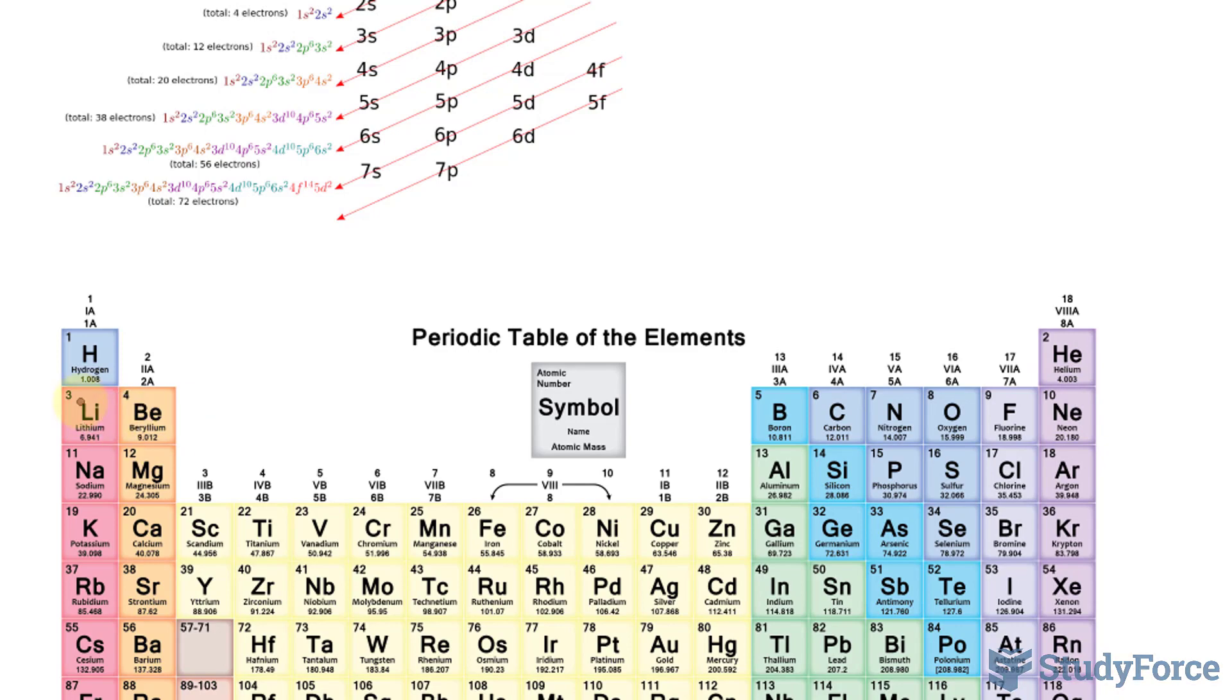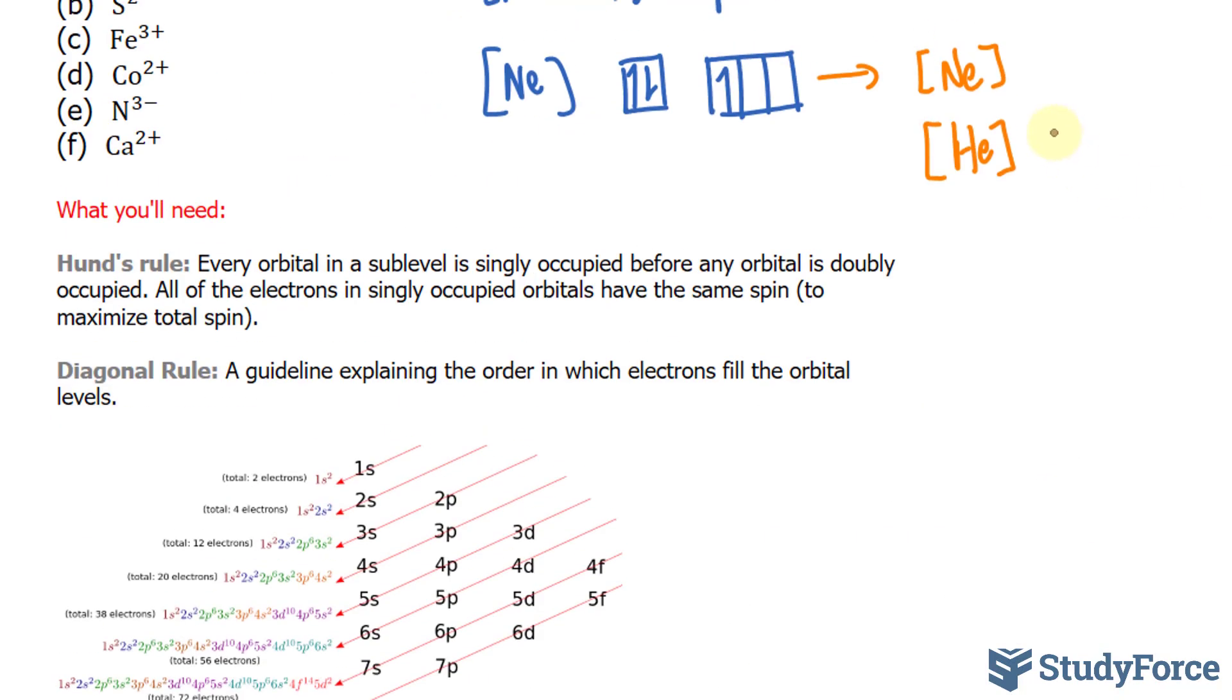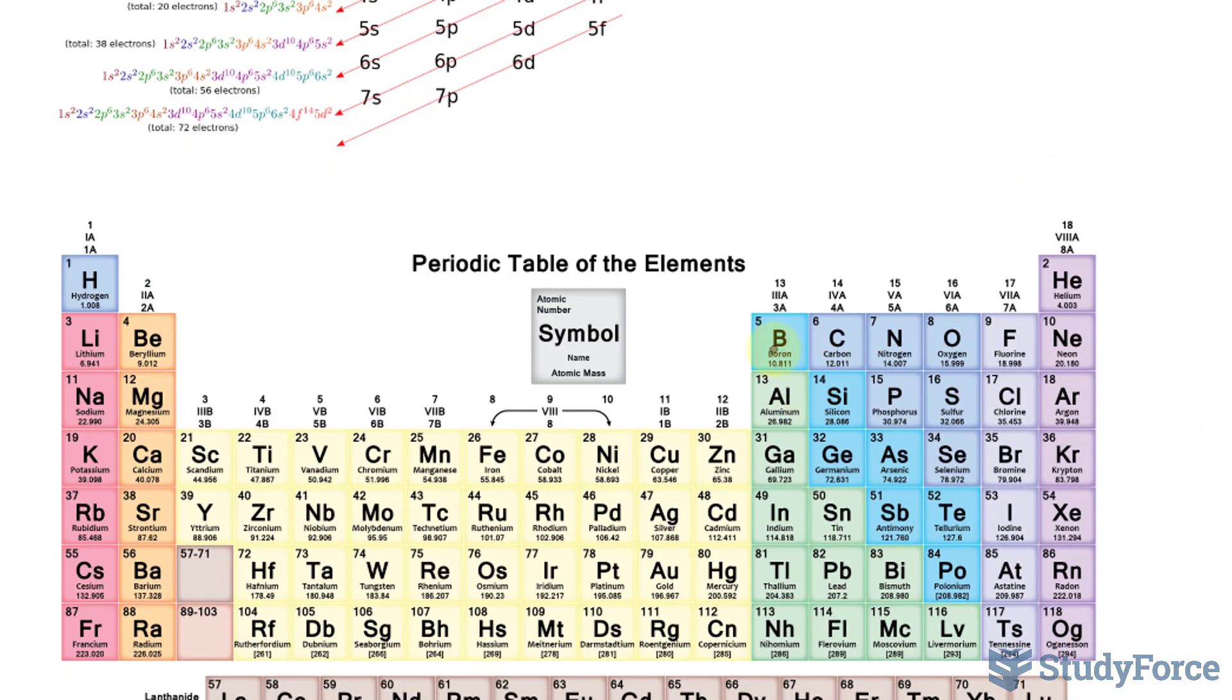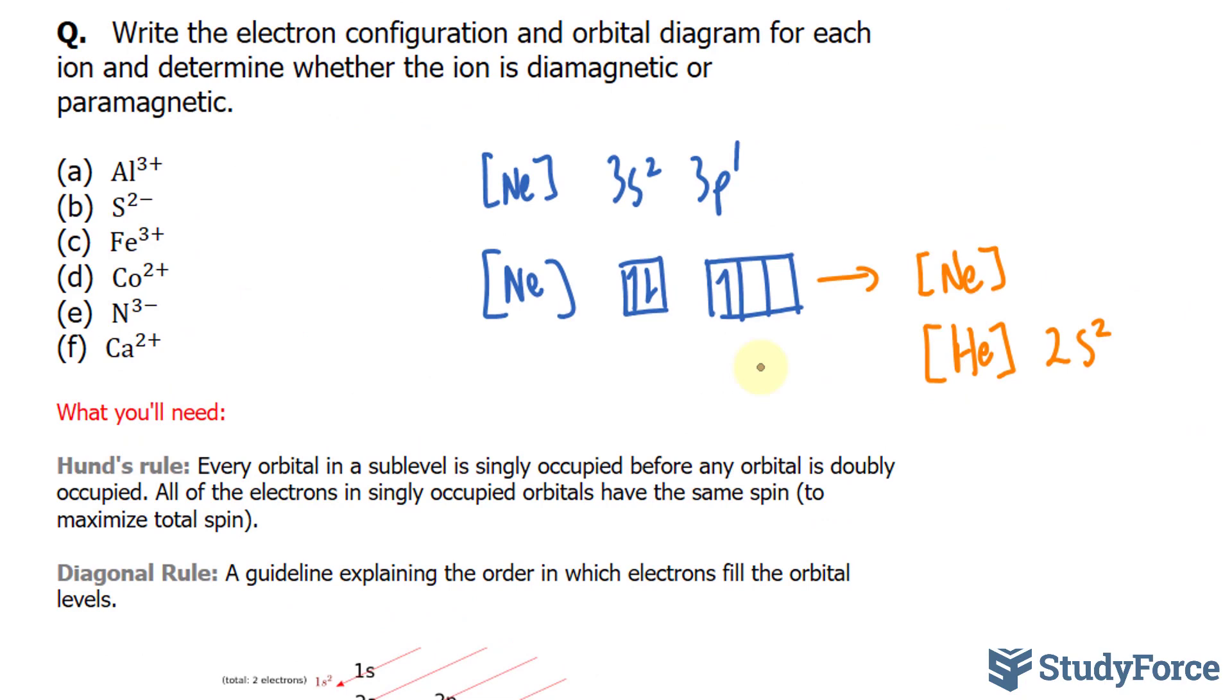So we have 2s2, the two electrons here, 2s2, and 1, 2, 3, 4, 5, 6. After s comes 2p6. So either of these will work when it comes to writing the electron configuration or orbital diagram for aluminum 3+.